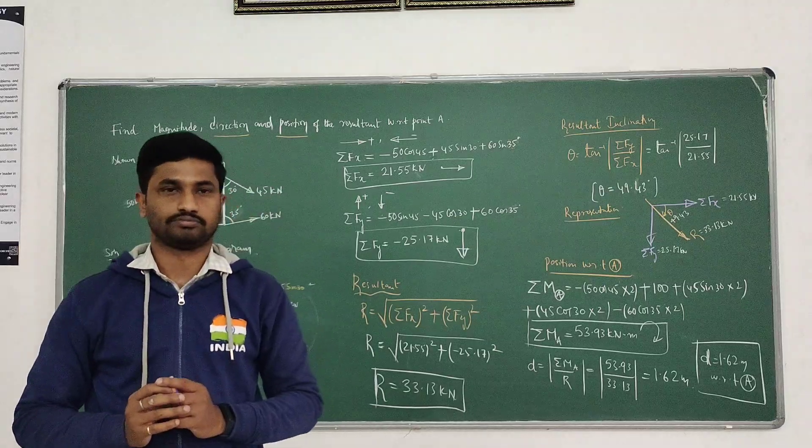Now compute the position — the distance D with respect to point A. D equals the magnitude of sigma Ma divided by R. Sigma Ma is 53.93 kNm and R is 33.13 kN, giving D equal to 1.62 meters. So D equals 1.62 meters with respect to point A. If the x-intercept and y-intercept are required: x-intercept equals sigma Ma divided by sigma Fy, and y-intercept equals sigma Ma divided by sigma Fx.